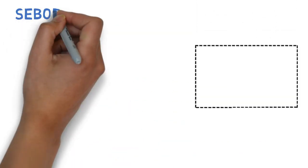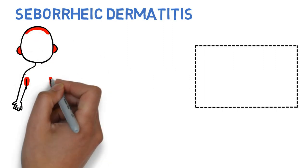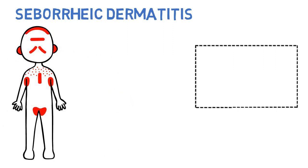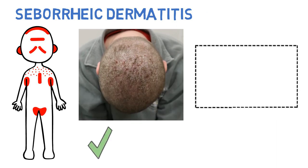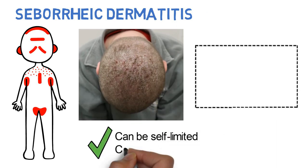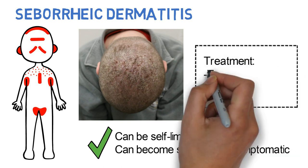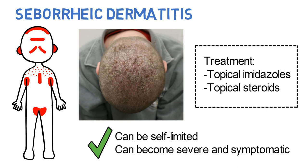Seborrheic dermatitis presents with pruritic erythema in sebaceous gland-rich regions of the body. There may be a greasy yellow scale. It can be self-limited, but at times can become quite severe and symptomatic. Treatment includes topical imidazoles and topical steroids.